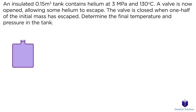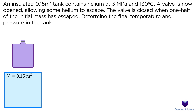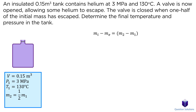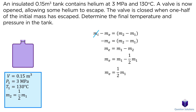Let's take a look at this question where we have a tank containing helium. When a valve is opened, helium escapes and we need to figure out the final temperature and pressure in the tank. The volume of the tank is 0.15 cubic meters, the initial pressure is 3 MPa, and the temperature is 130 degrees Celsius. We are told that one half of the initial mass escapes when the valve is opened, meaning the final mass is equal to half of the initial mass. Starting with the mass balance equation: since mass doesn't enter the tank, we eliminate that term, and plugging in that the final mass equals half the initial mass gives us our mass balance equation.